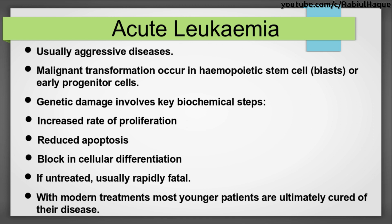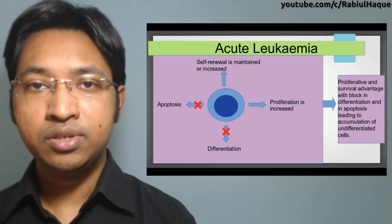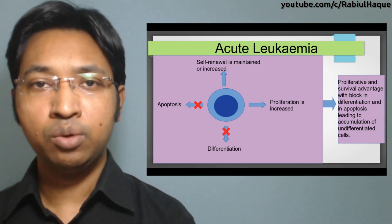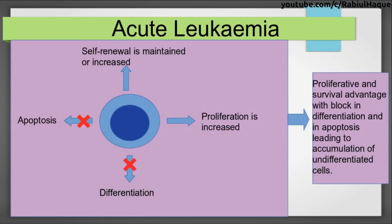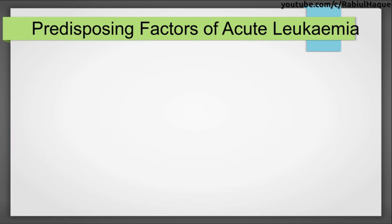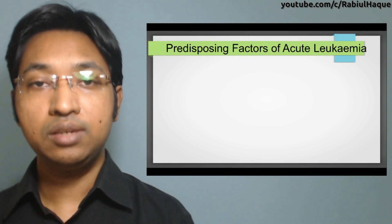However, with modern treatments most younger patients are ultimately cured of their disease. This image summarizes how acute leukemias develop following genetic damage: at the center is a stem or blast cell where apoptosis and differentiation are blocked, while self-renewal and proliferation are increased, leading to accumulation of undifferentiated cells — that is the basic mechanism of acute leukemias.